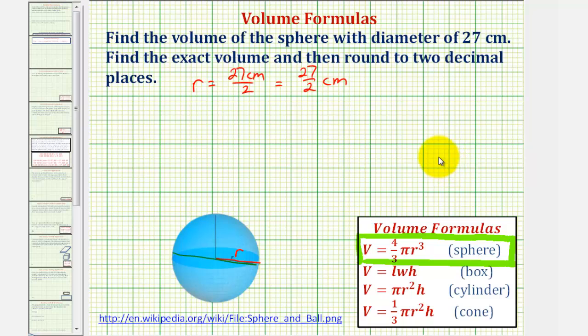And now we can find the volume. The volume is going to be equal to four-thirds times pi times r cubed. Let's leave the units off, and just remember that the units will be cubic centimeters. So we'll have 27 halves cubed.